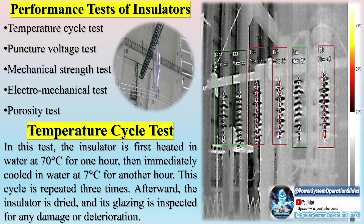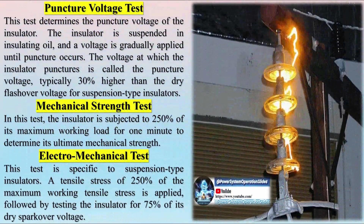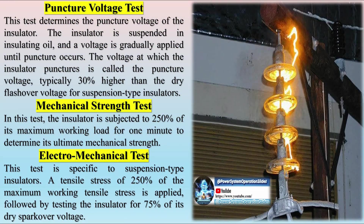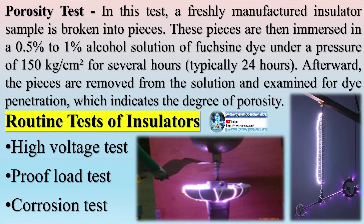Power frequency wet flashover test, also known as the rain test: the insulator is mounted as it would be in use, and a variable power frequency voltage source is connected between the electrodes, similar to the dry test. Additionally, the insulator is sprayed with water at a 45-degree angle, ensuring precipitation does not exceed 5.08 millimeters per minute. The voltage is gradually increased to the specified level and maintained for 30 seconds to one minute. The insulator is observed for puncture or breakdown. If the voltage is maintained for one minute, this is also known as the one-minute rain test.